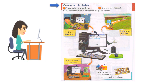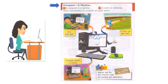Computer: a machine. A computer is a machine. It works on electricity. Some characteristics of a computer are: it is very fast, it does not get tired, and it never makes a mistake.